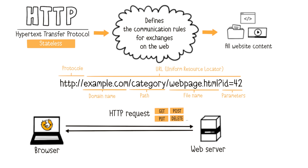A web browser might send a GET request to retrieve data, or other types like PUT or POST to submit form data or download files. The web server then looks for the desired file and first sends information to the client about the status of its search.